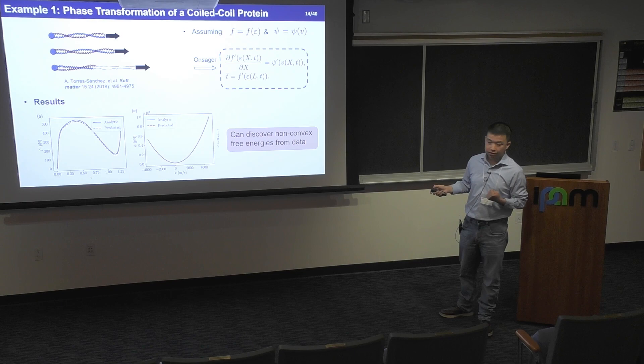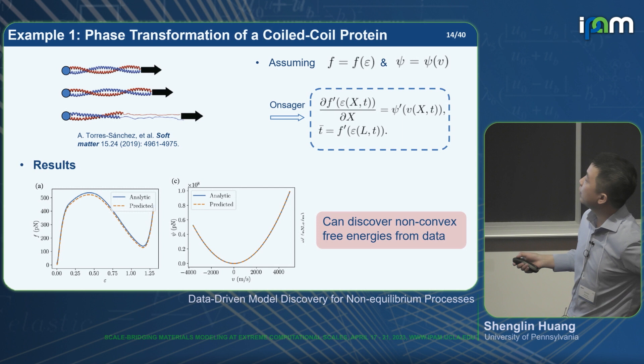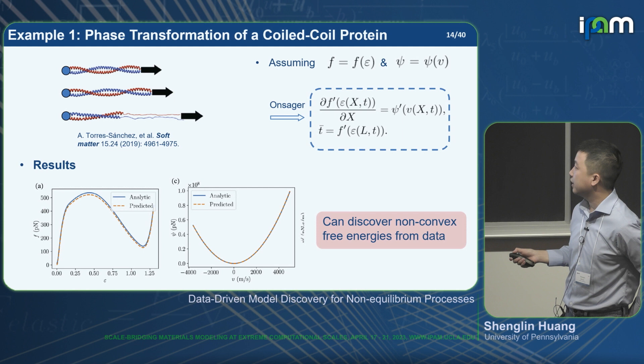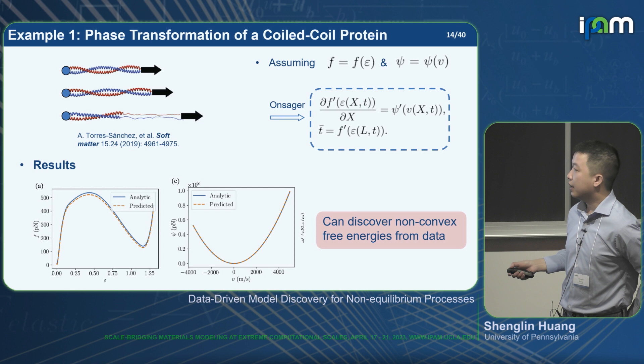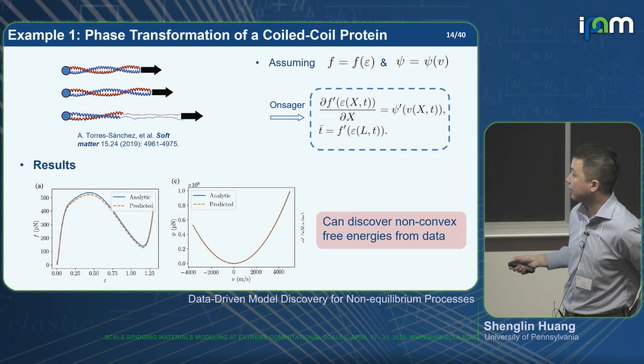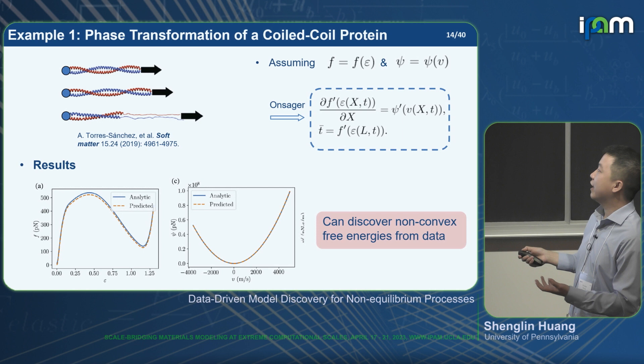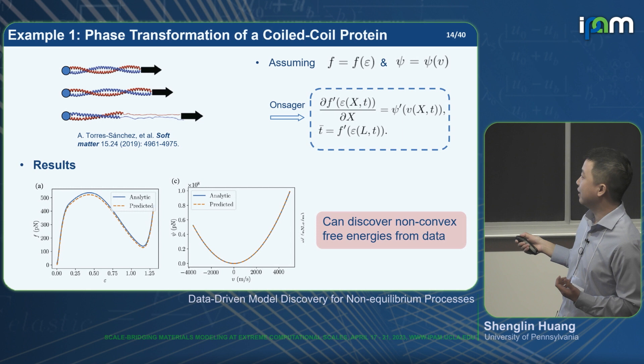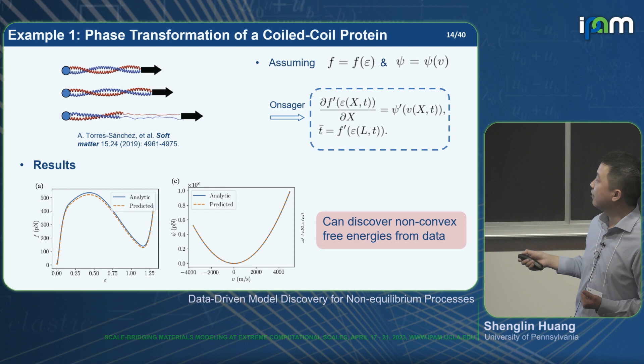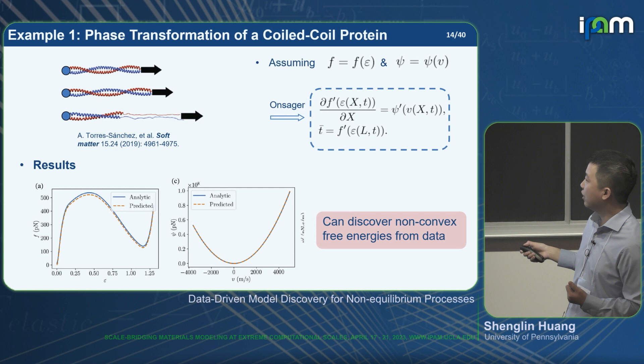I will use three examples to show how we utilize this structure. The first is phase transformation of a so-called protein, which is characterized by a non-convex free energy with two minima — when you pull it, it jumps from the first minimum to the second, a phase transformation process. If we only have the system evolution and assume free energy is a function of local strain and dissipation potential is a function of local velocity, from the variational principle we obtain the governing equations and use them to construct the neural networks.